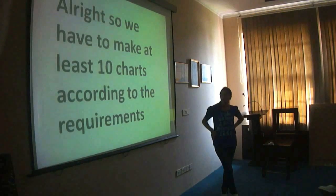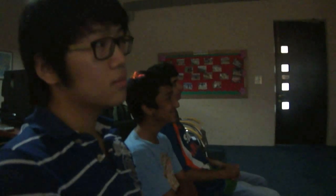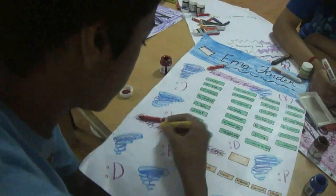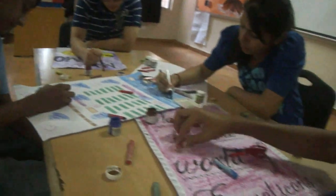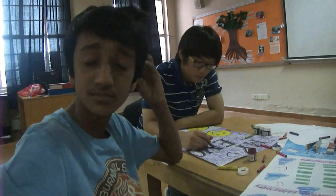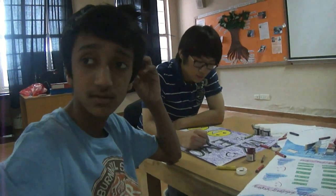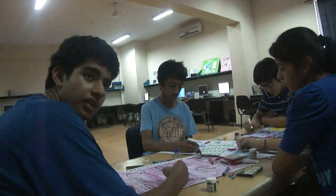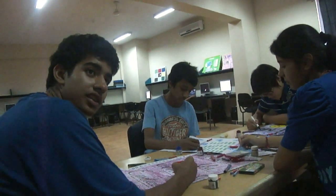After the briefing, each of the team leaders got down to work. They started briefing their own teams. First up was the design team, and she started briefing her team. They were told to make charts according to the requirements and then pass those charts on to the coders. And they got down to business. These are the different charts and diagrams that we are going to pass on to the coders.